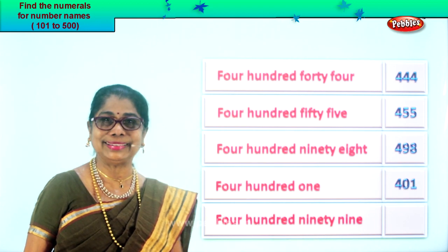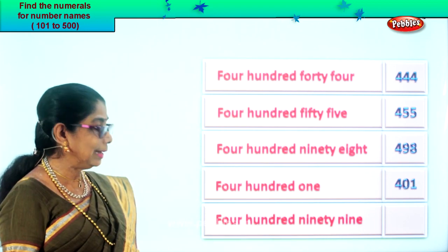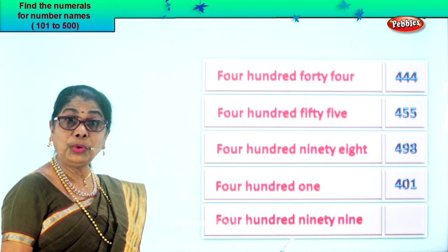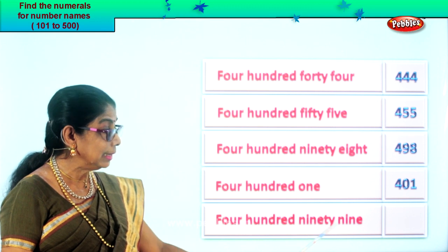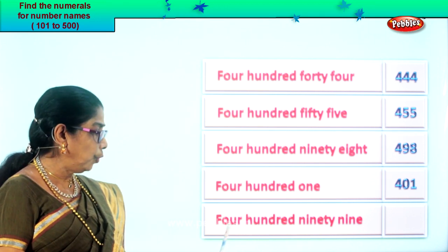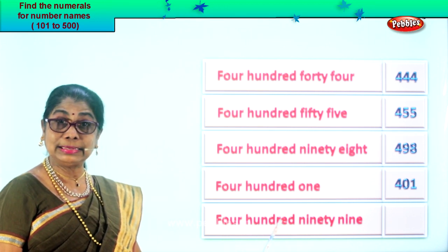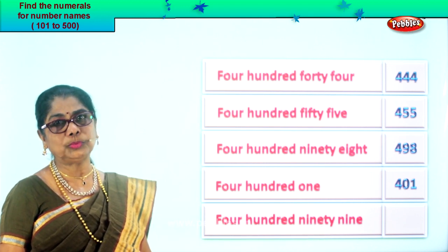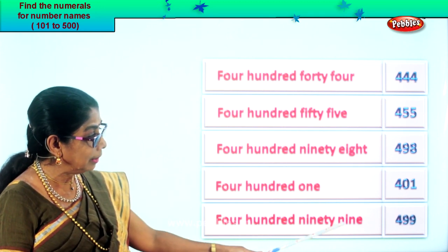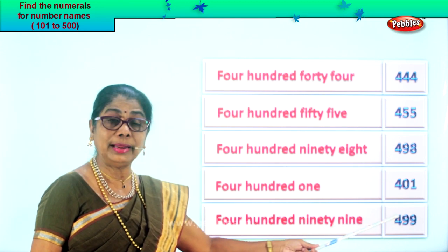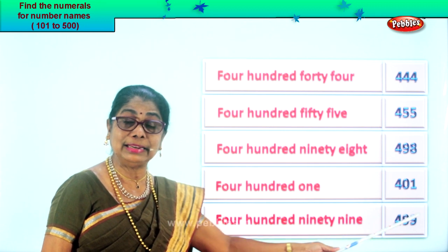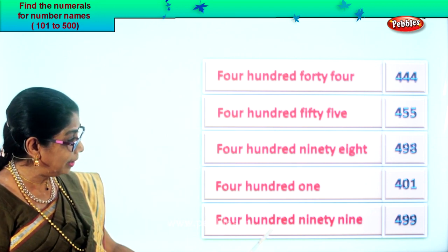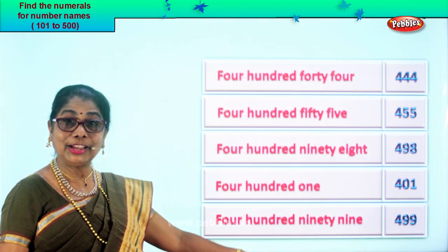Good. Let's take the last number name: four hundred ninety-nine. You have four in the hundredth place, ninety-nine — nine in the tens place, nine in the ones place. So you get four, nine, nine. Four hundred ninety-nine. Read this: four hundred ninety-nine. Good.